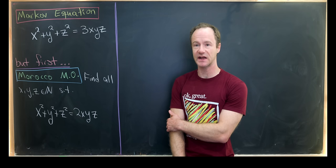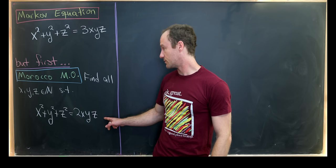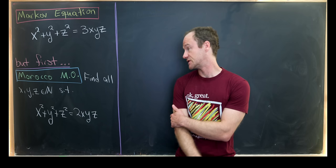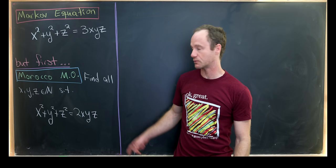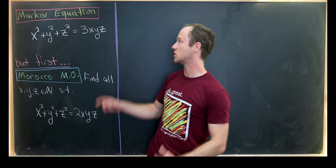I want to look at a somewhat simplified version of this equation which was on a Moroccan math Olympiad. That Olympiad asked us to find all natural numbers, in other words, positive integers x, y, z, satisfying this fairly similar equation. So it's pretty similar. We've replaced this 3 with a 2,